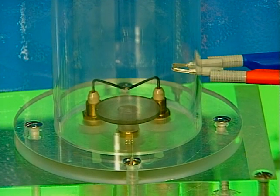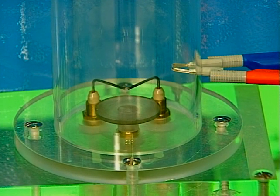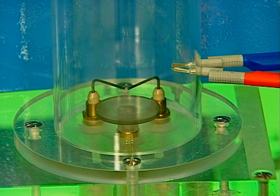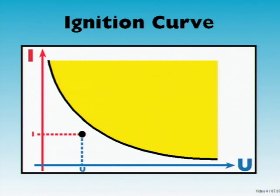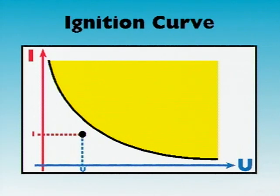So that no spark is created that can lead to an explosion, the energy must be kept below the ignition energy of the mixture-specific limit ignition curve. This means that both the voltage and the current values in the explosive environment must be limited.